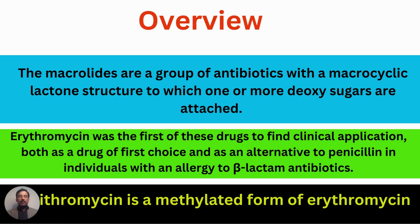Clarithromycin is a methylated form of erythromycin. Clarithromycin and erythromycin have the same structure — both have a 14-member lactone ring — but when we replace the hydroxyl group at position 6 with a methoxy group, clarithromycin is produced.